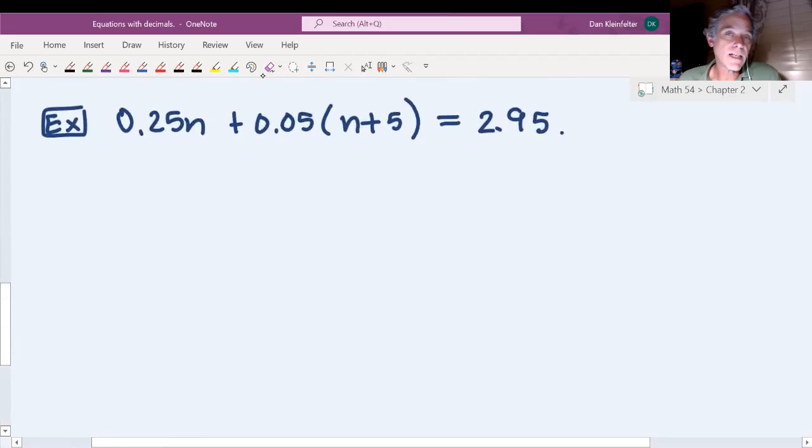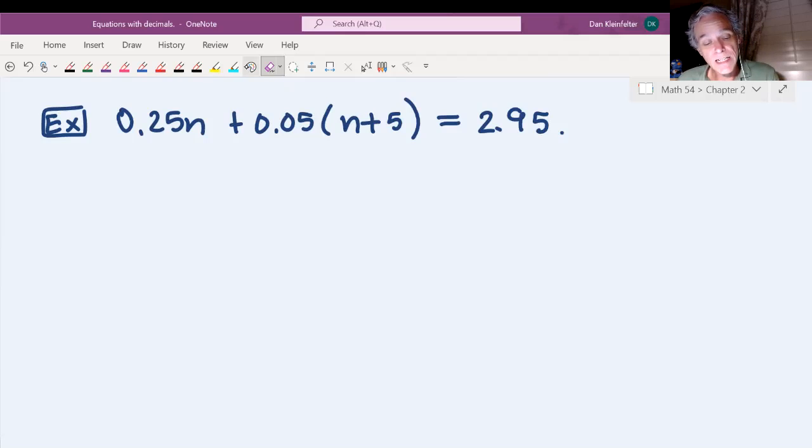So on this one, taking a look at the numbers or digits behind the decimal point. In the first number, we have 0.25. So two digits. In the 0.05, we have two digits. In the last one, two digits. So we're going to move over the decimal point two places in each of those coefficients. So we will have 25n plus 5 times n plus 5. That's equal to 295.